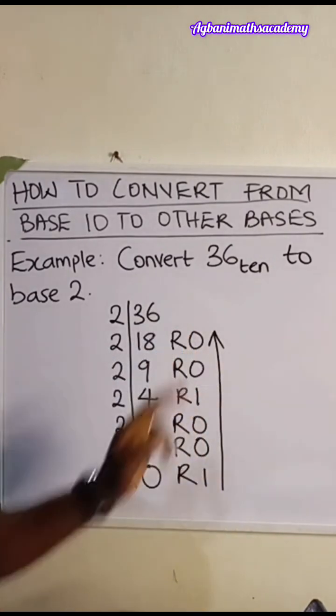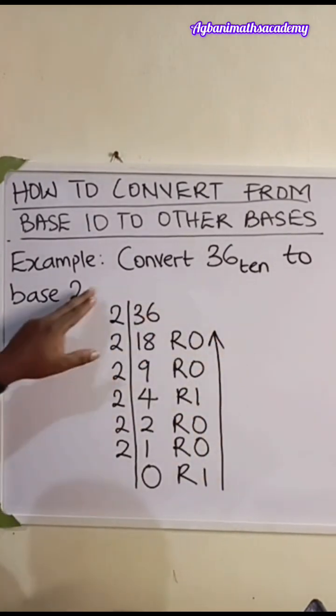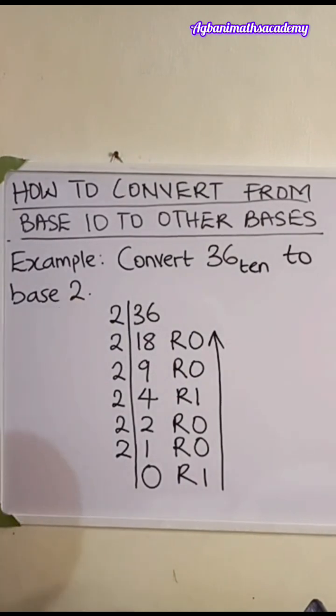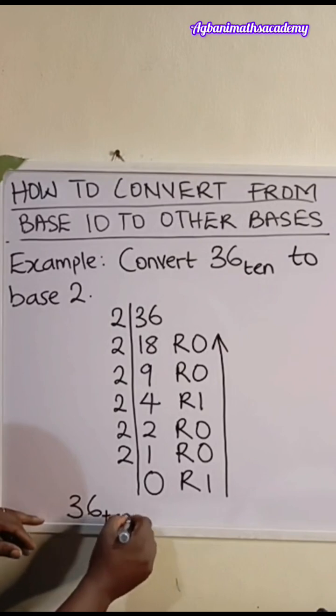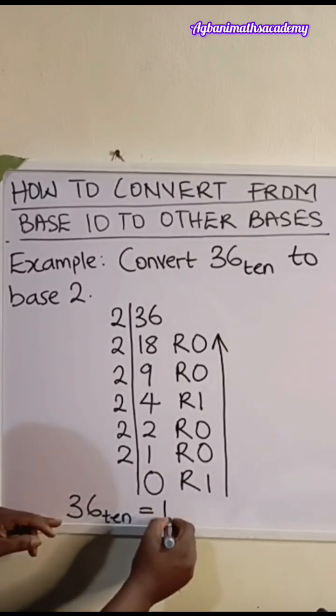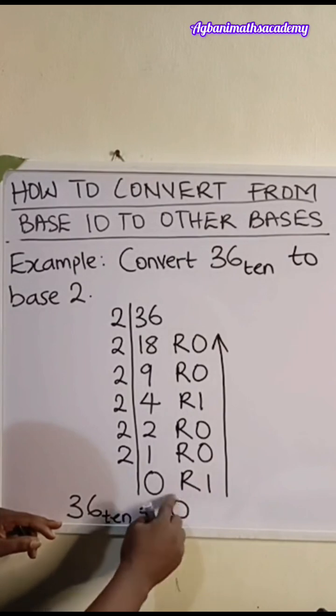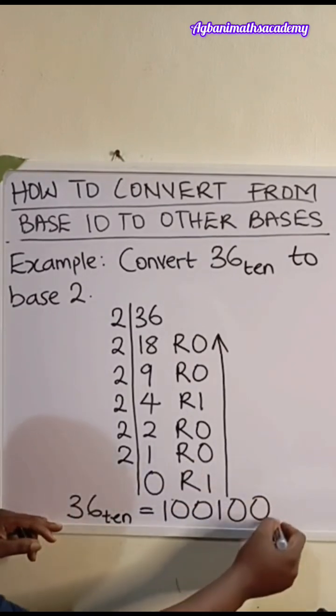This number we have here is the equivalent of 36 base 10 in base 2. So let me write it here. 36 base 10 is equal to 1, 0, 0, 1, 0, 0, base 2.